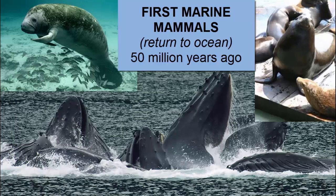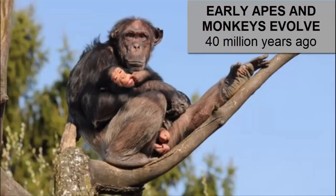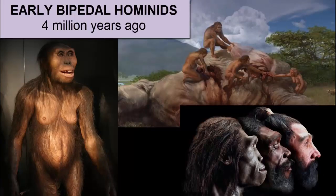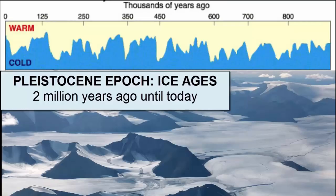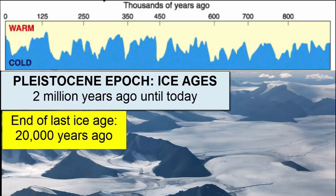Early mammals co-existed with the dinosaurs, but after the dinosaurs went extinct 65 million years ago, mammals continued to evolve to fill the now-empty niches left behind. 50 million years ago, some land mammals returned to the ocean, evolving into whales, sea lions, seals, and other marine mammals. The earliest monkeys and apes evolved 40 million years ago, and the oldest evidence of early bipedal hominids is 4 million years ago. 2 million years ago, we began the period of cyclic ice ages that we are coming out of today, with the last ice age ending only 20,000 years ago.